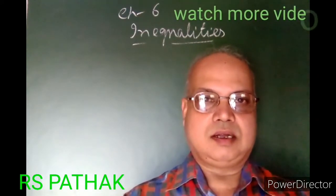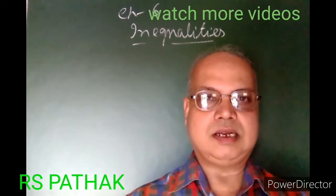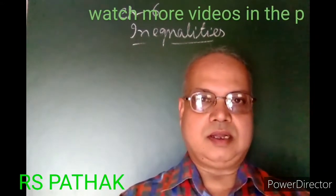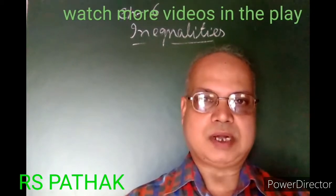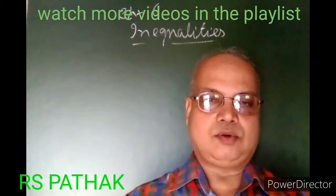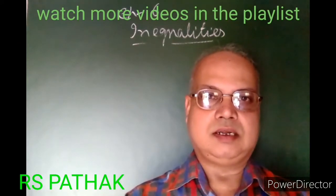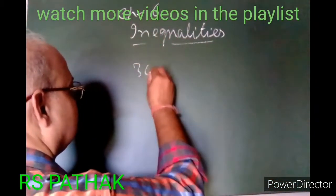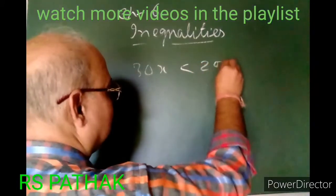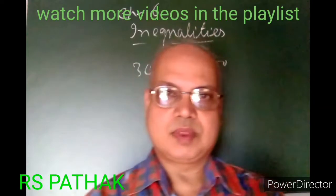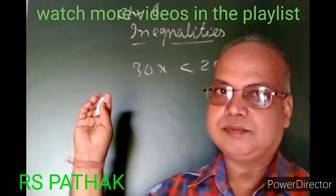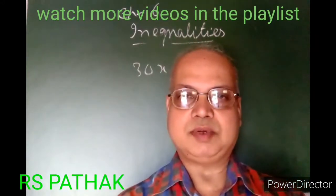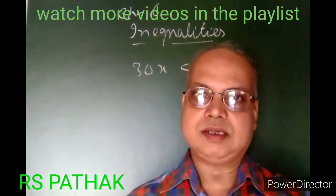How many packets should I buy? Let us suppose the number of packets is x. In algebraic form: since the cost of each packet is 30 rupees, the total money spent by me is 30x. This 30x will be less than 200, because it will not exceed — I have only 200 rupees.